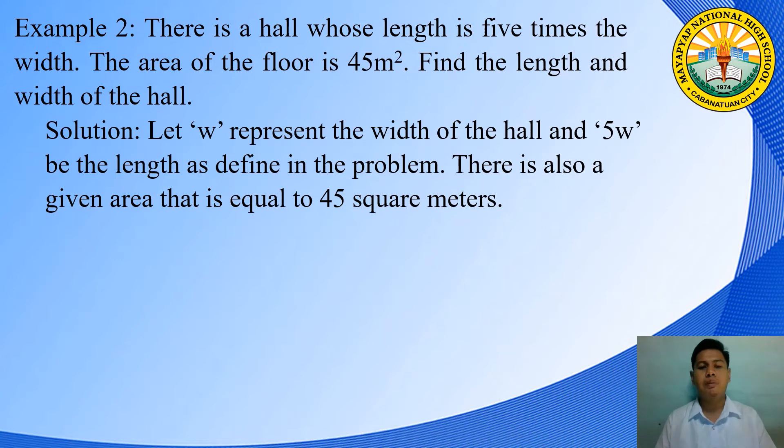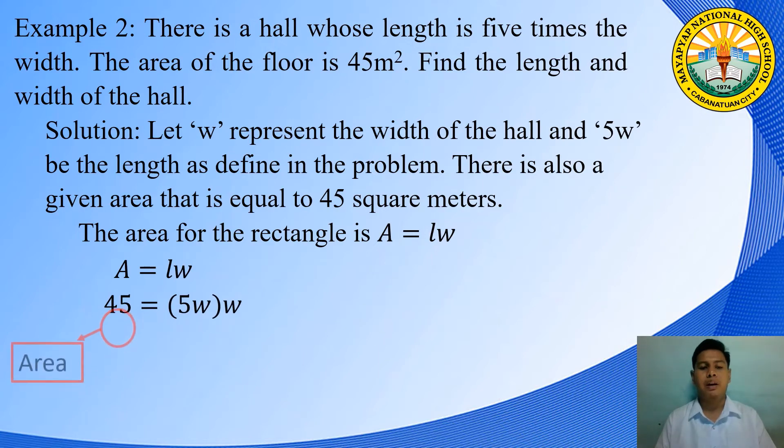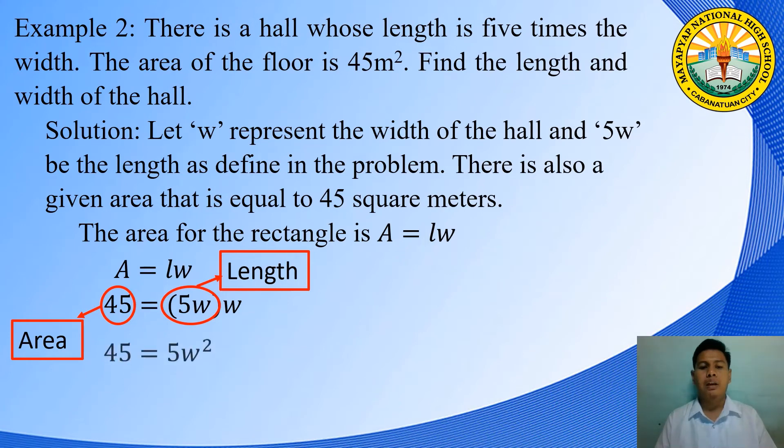Since we have length and width, the shape of the hall is a rectangle. The area for the rectangle is area equals length times width. Let's substitute the given into the equation. The given area is 45 and the length is equal to 5W. Getting the product of the right side of the equation, the equation will become 45 = 5W².